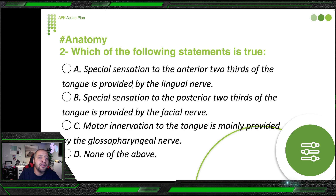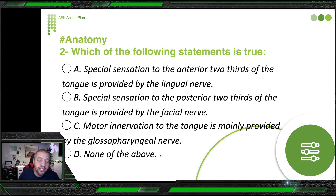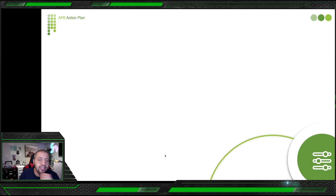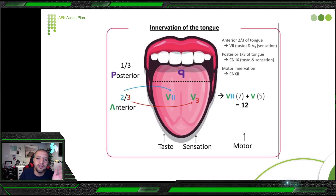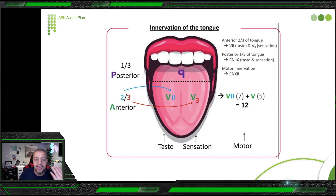Second question from anatomy: which of the following statements is true? (A) Special sensation to the anterior two-thirds of the tongue is provided by the lingual nerve. (B) Special sensation to the posterior two-thirds is provided by the facial nerve. (C) Motor innervation to the tongue is mainly provided by the glossopharyngeal nerve. (D) None of the above. Before answering, let's discuss innervation of the tongue, dividing it into anterior two-thirds and posterior one-third.